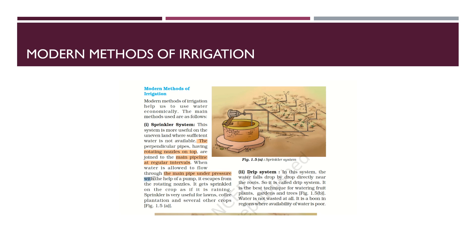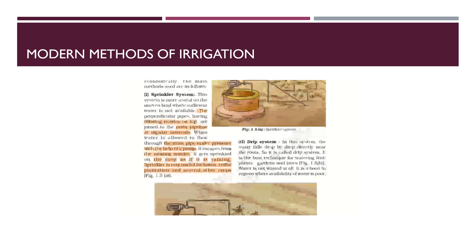At regular intervals, water is sprinkled from the main pipe under pressure with the help of a pump system. As these rotating nozzles keep on rotating, the full agricultural field gets equal distribution of water. The sprinkler system is not used when it is raining. Sprinklers are useful for lawns, coffee plantations, and several other crops. If you have a big lawn at home, the sprinkler system will keep on watering it throughout.